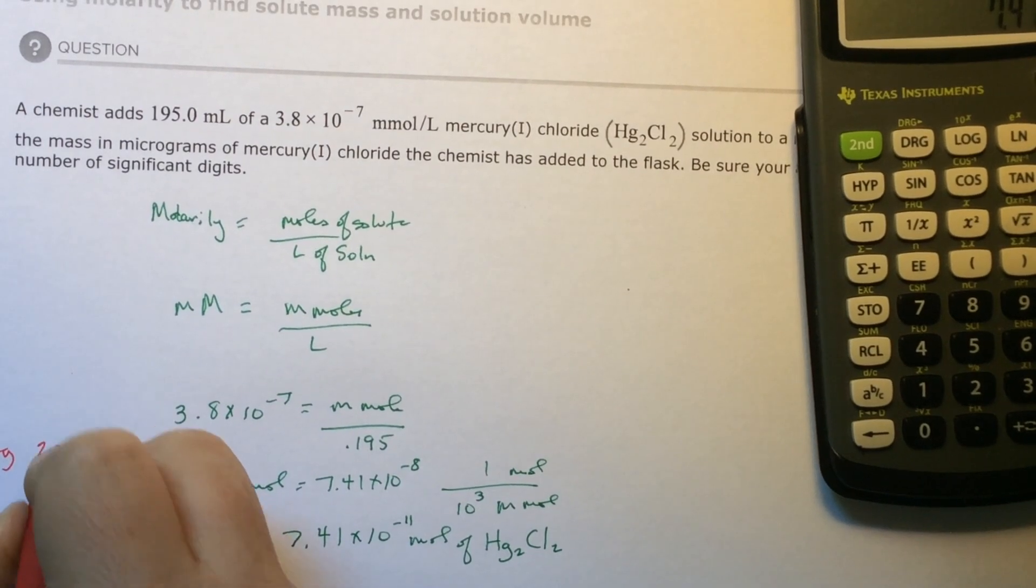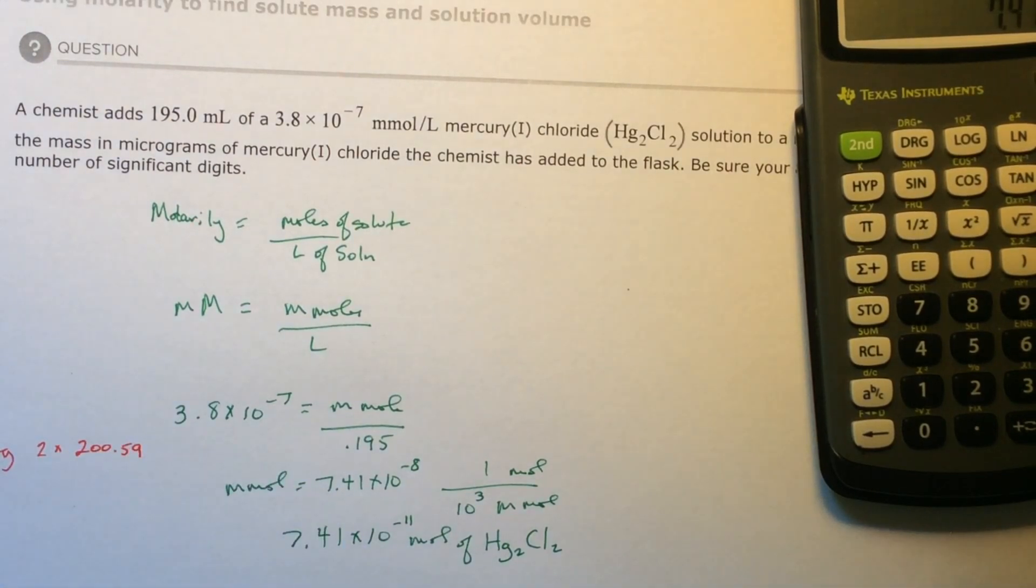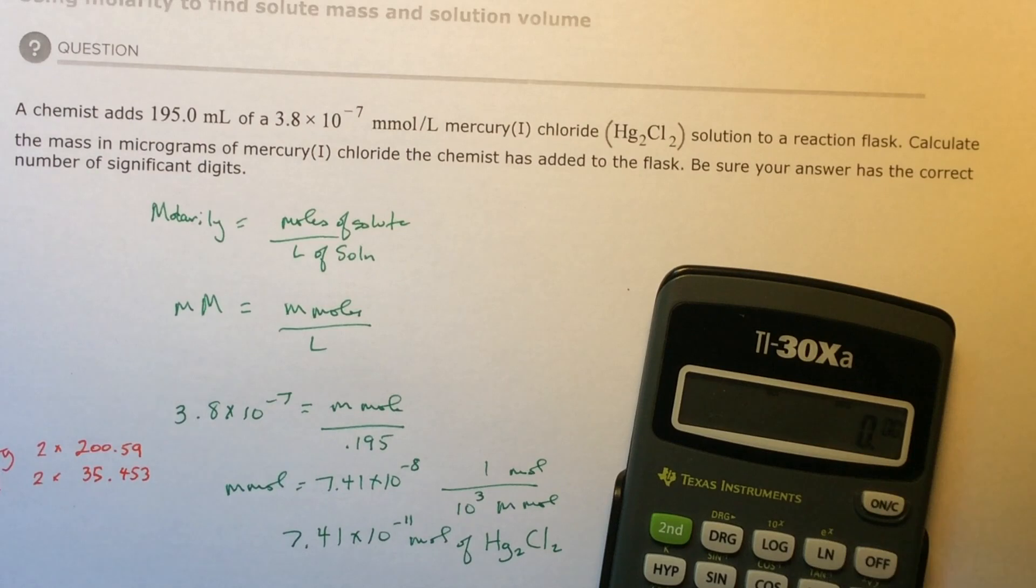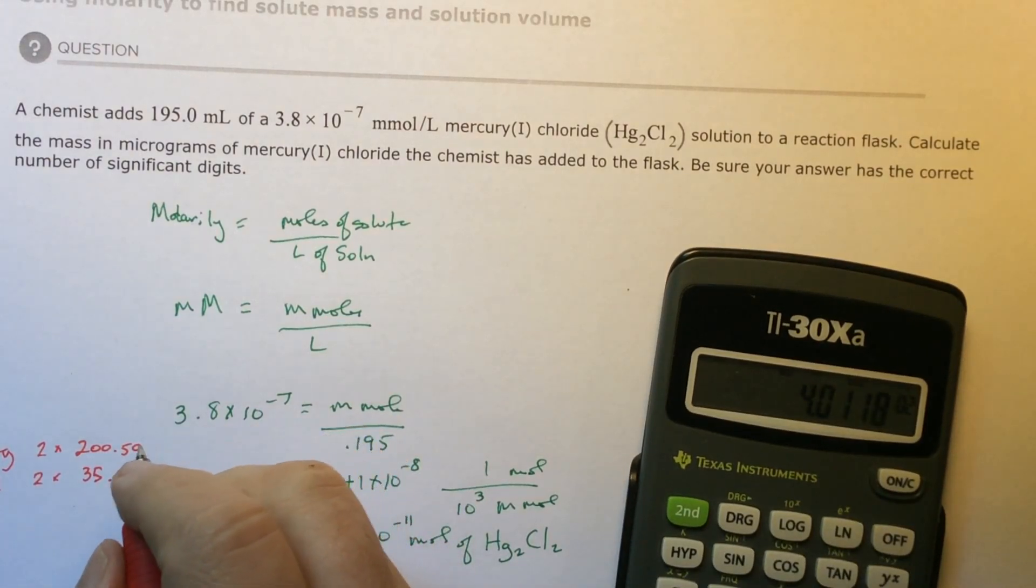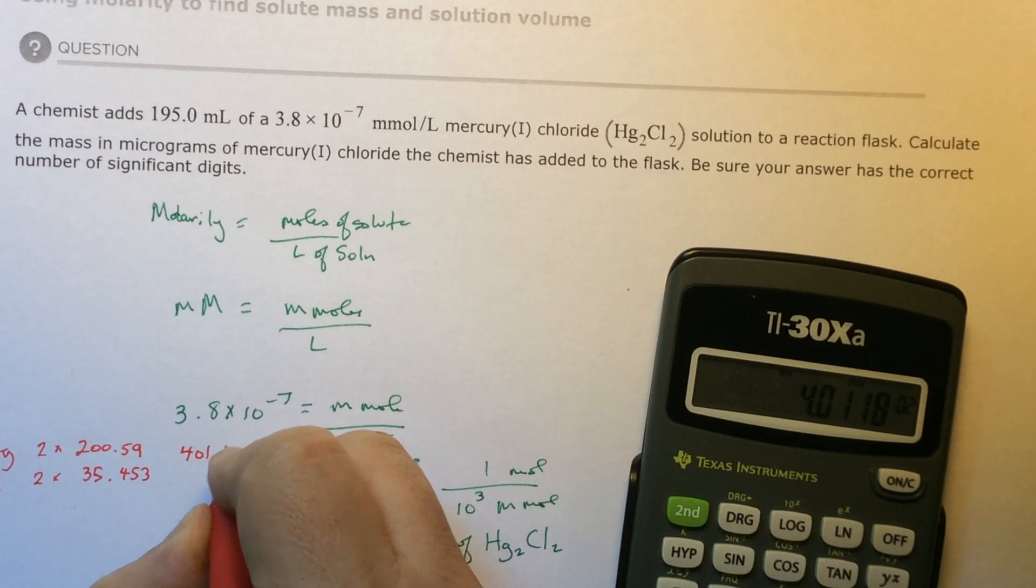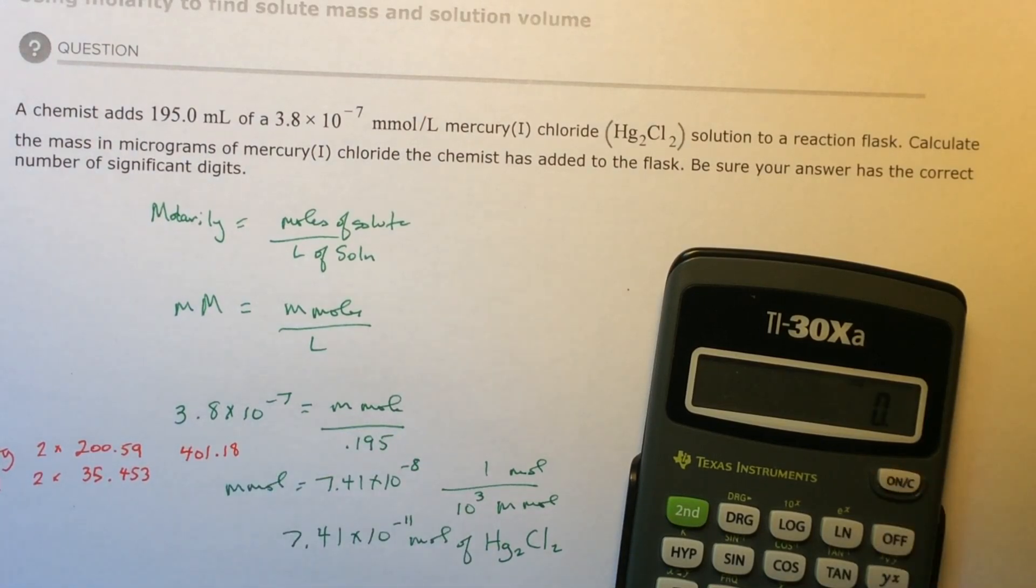Mercury, I'm going to have 2 times 200.59. And then Cl, I have 2 times 35.453. So I have 401.18 and 70.906.